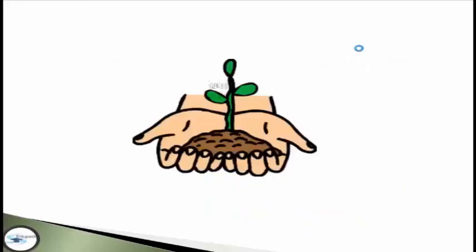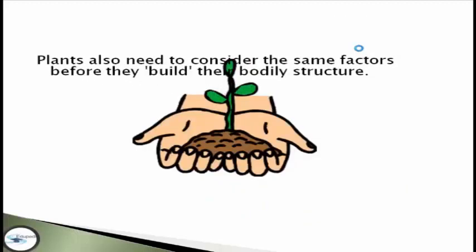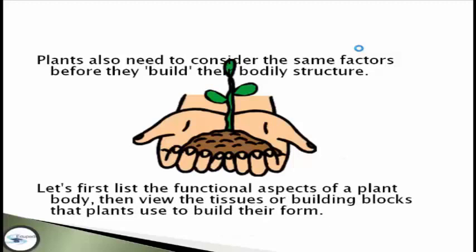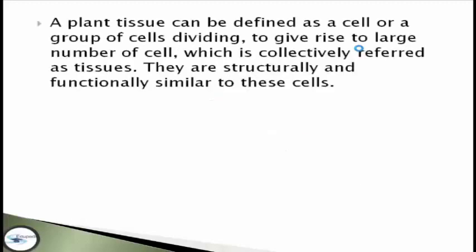The same as plants. Plants also need to consider the same factors before they build their bodily structure. So now let's first list the functional aspects of a plant body, then view the tissues or building blocks that plants use to build their forms. A plant tissue can be defined as a cell or a group of cells dividing to give rise to a large number of cells, which is collectively referred to as tissues.